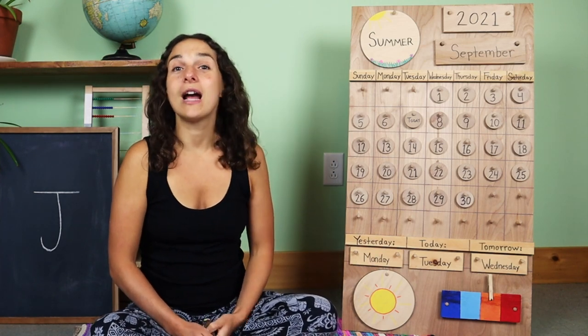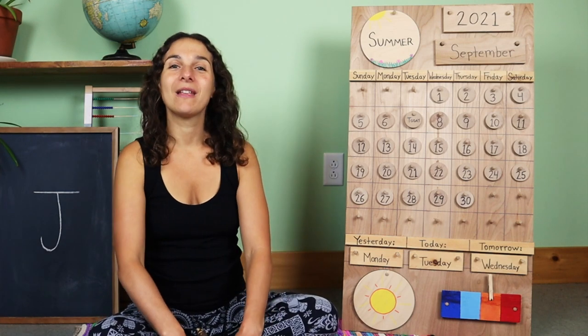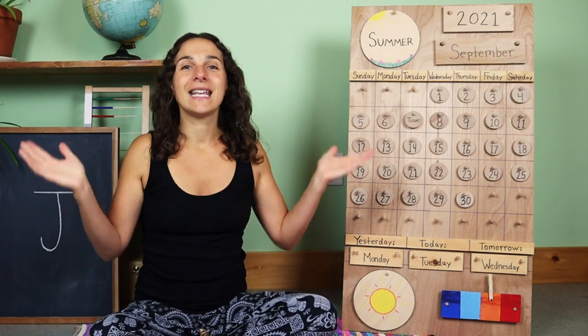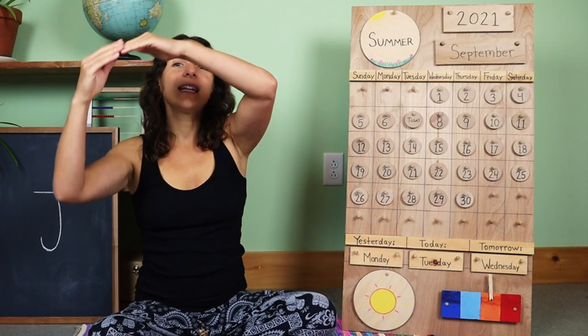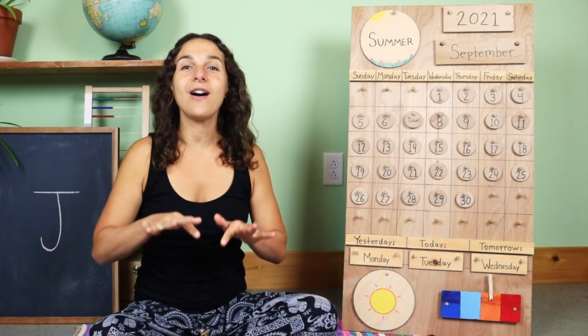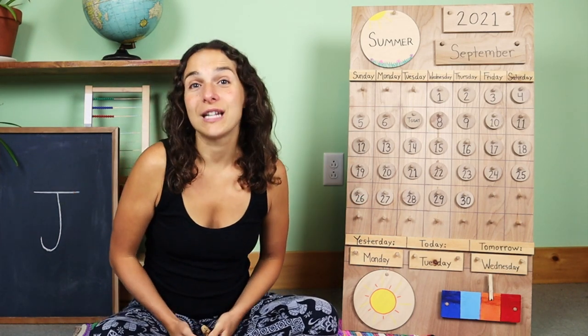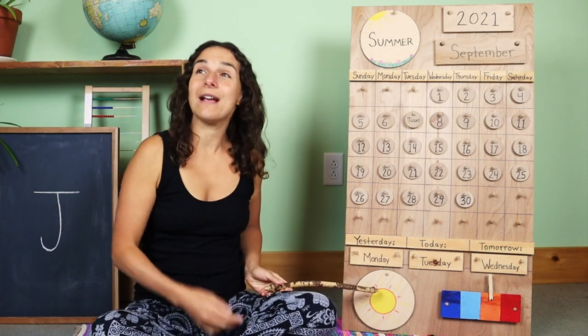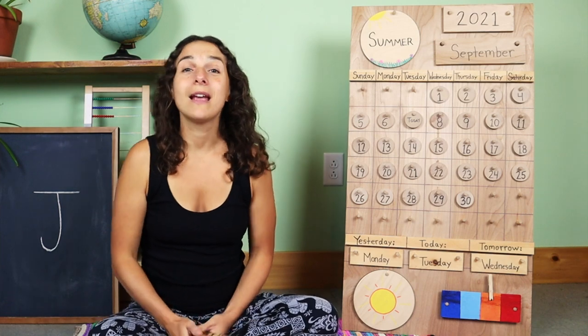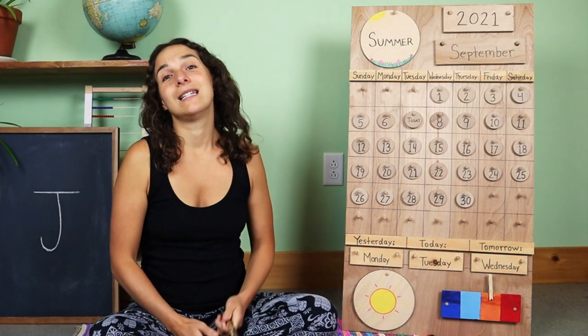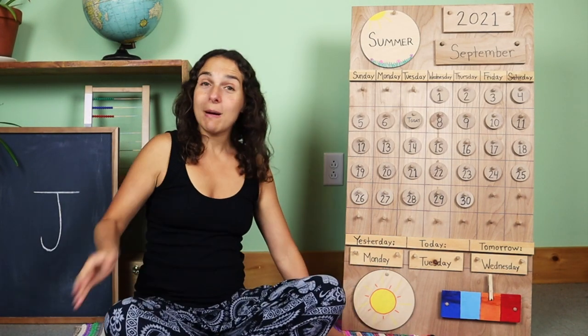Let's sing the weather song together and then we can talk about what we see outside. What's the weather? What's the weather? Can you tell? Can you tell? Is the sun shining? Is the rain falling? Can you tell? Can you tell? Today where I live it's a sunny day. When I look outside my window, the sky is blue, the sun is shining, and my temperature chart is on orange because it's warm. Today is warm and sunny. What about you, friends? What do you see outside of your window? Thanks for sharing the weather with me.